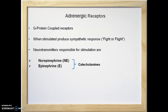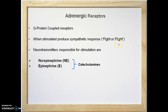Neurotransmitters in the adrenergic system bind to the adrenergic receptor. Adrenergic receptors are G-protein coupled receptors, which are one class of receptors. When adrenergic receptors are stimulated, they produce a sympathetic response — that is the response required in a fight-or-flight condition.